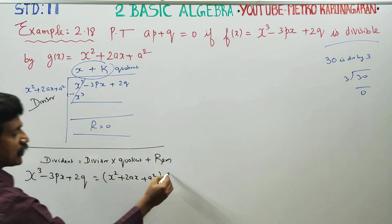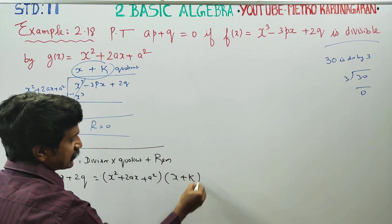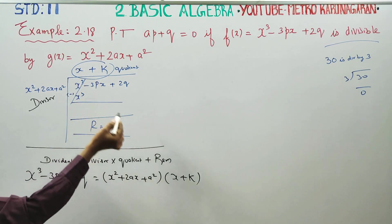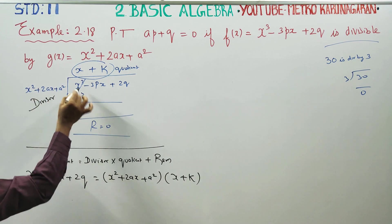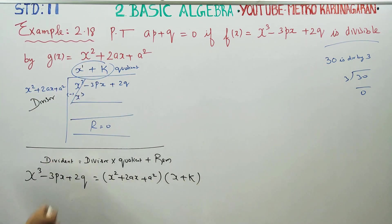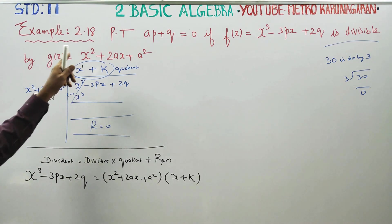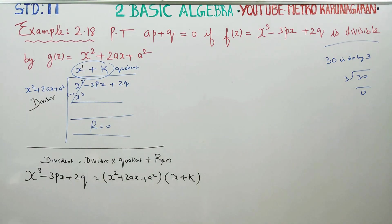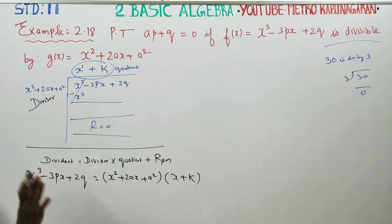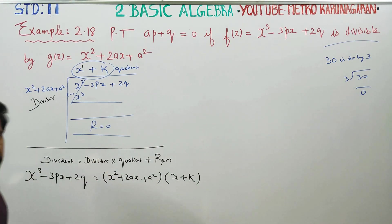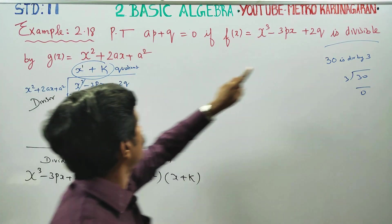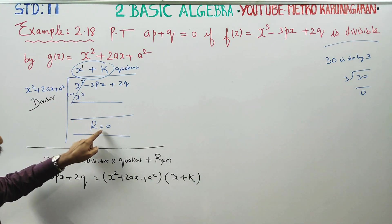Into quotient — I want to get the quotient. The degree of the dividend minus the degree of the divisor gives the quotient's degree: degree 3 minus degree 2 gives degree 1, so the quotient will be linear, and the remainder is 0.